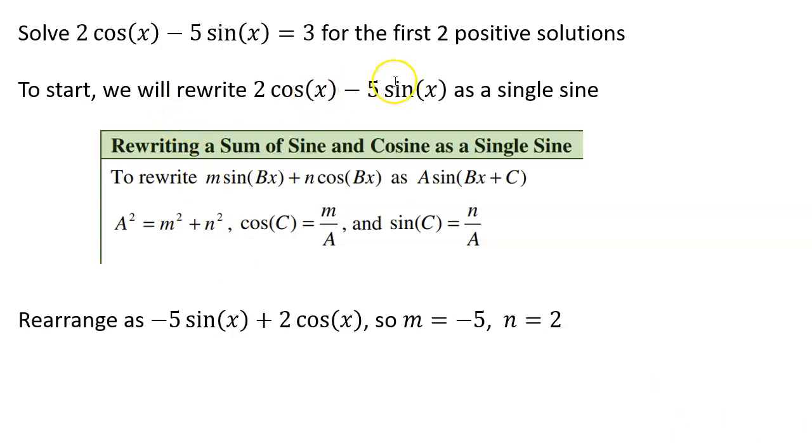So the first thing we're going to do is notice that the order of the terms here does not match the order of the terms in our definition, right? The order in our definition started with the sine function. So the first thing I'm going to do is rewrite this as negative 5 sine x plus 2 cosine x,